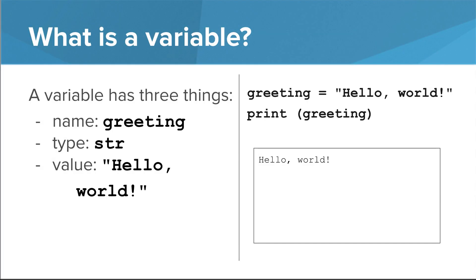So let's look at the two variables that we just saw and spell out each of these three characteristics. In the case of the variable greeting, the name of the variable is greeting. The type of the variable is str, which I'll explain in a second, and the value is hello world in quotes.